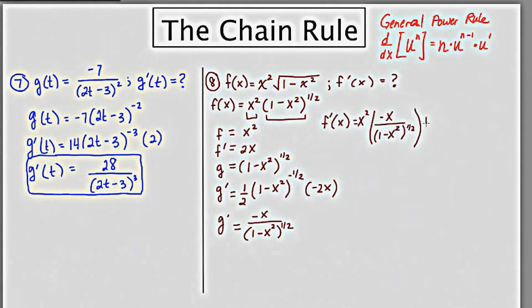plus the second, which is 1 minus x squared to the 1 half, times the derivative of the first, which is 2x.